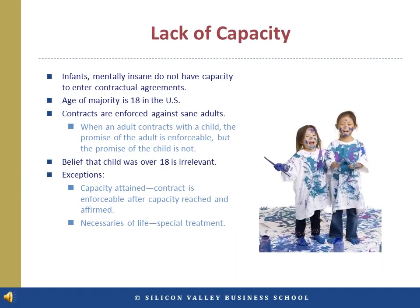Contracts are enforced against sane adults, not children or the mentally infirm. So a contract between two children would be unenforceable on both sides. However, a contract between a child and an adult would be enforceable by the child but not by the adult. The promise of the adult would be enforced by the court, but the promise of the child would not. It's irrelevant if the adult believed the child was older than 18 — the child's promise is still deemed unenforceable for lack of capacity.